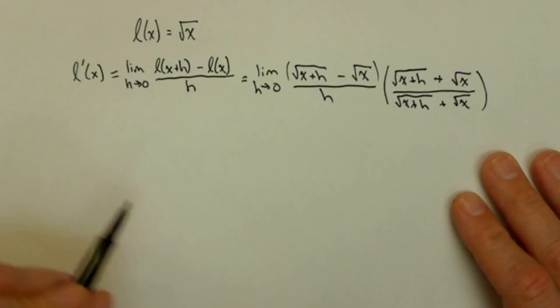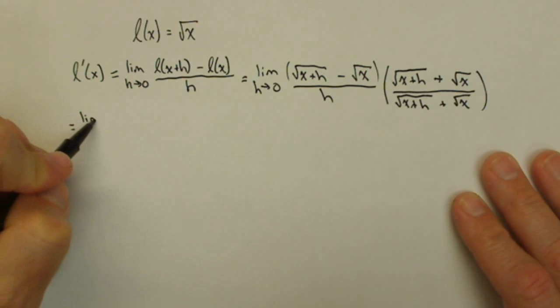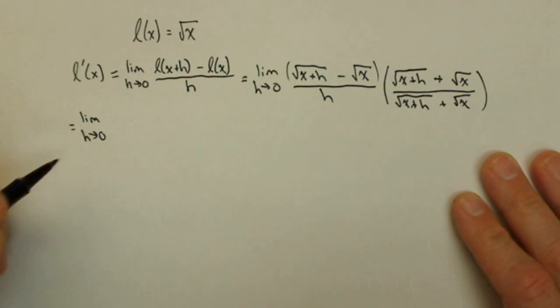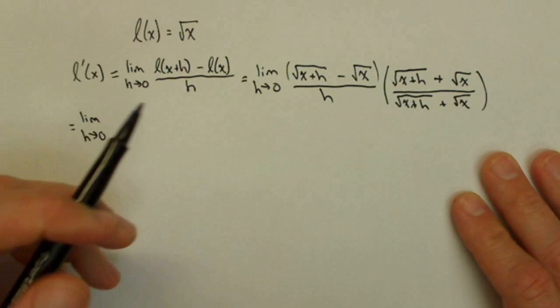Now in the numerator I want you to imagine foiling that out. So we're going to have limit as h goes to zero and we write that until we have actually taken the limit as h goes to zero.